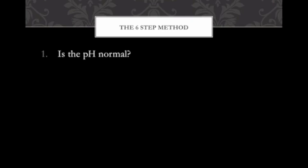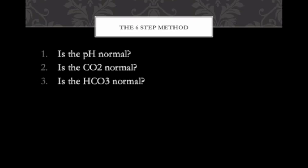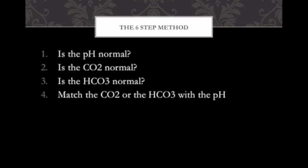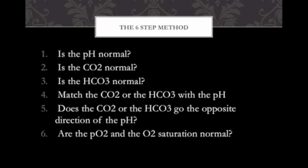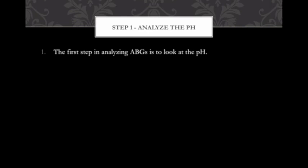Now, the six-step method — this is the best way to determine ABG values. Step one: look at the pH, see if it's normal. Step two: look at the CO2. Step three: look at the bicarb. Step four: match the CO2 or bicarb with the pH using ROME — is CO2 going in the opposite direction, or is bicarb going in the same direction? Step five determines compensation. Step six: look at PaO2 and O2 saturation to ensure the patient isn't hypoxemic.